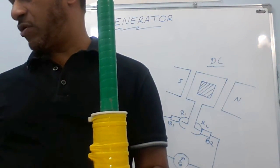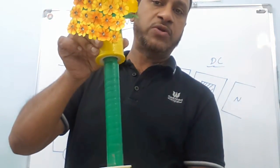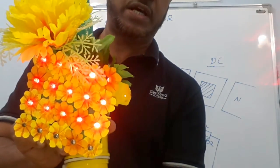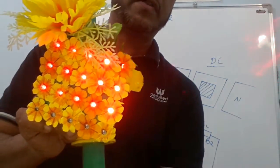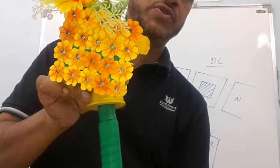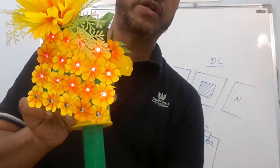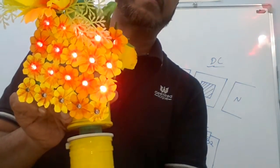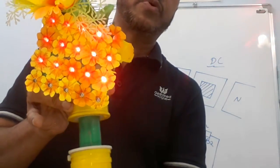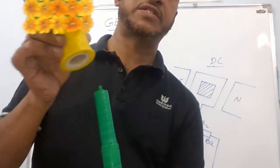When I move the secondary coil near to the primary, since an alternating current is flowing through the primary, it is producing a flux change, and due to the flux change it is inducing current in the secondary, and the LED is glowing. When I move it away, as the magnetic strength decreases, the light intensity also reduces because the induced current reduces. When I move it slowly downward, you can see the brightness of the LED increasing, becoming maximum when it is very close to the primary coil.